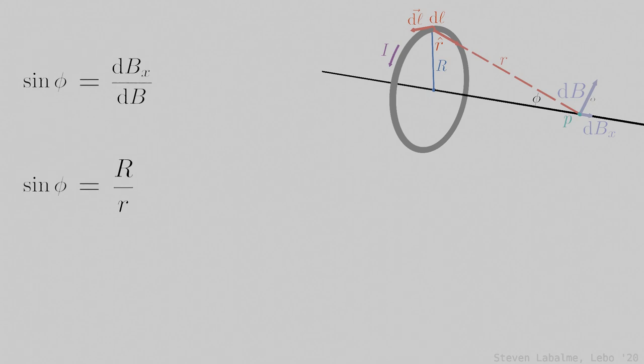Combining these two equations gives us dBx over dB equals big R over little r, or dBx equals big R over little r times dB. Note that it is a good idea to substitute out the trigonometric function because leaving phi just introduces another variable, further complicating the final equation.